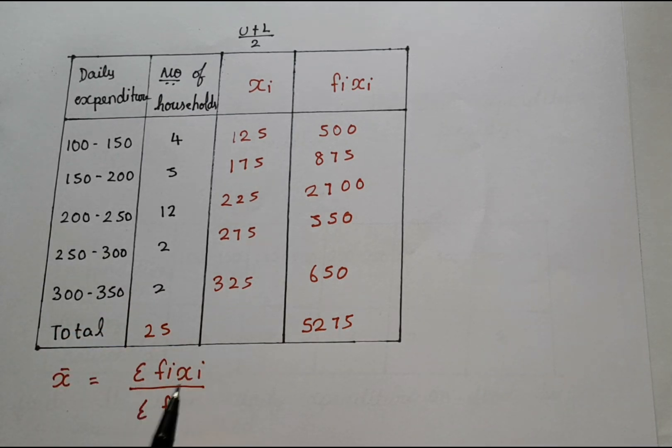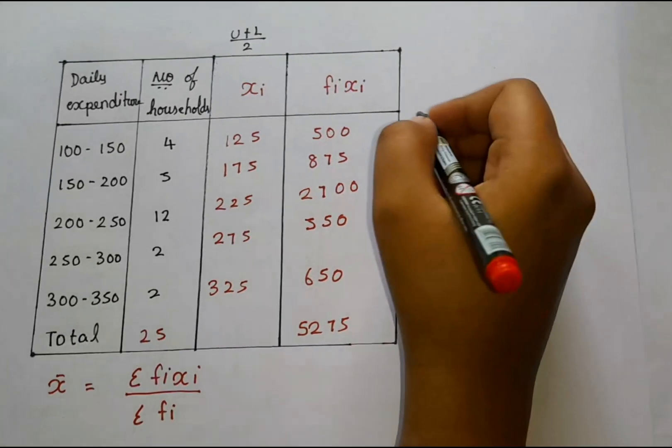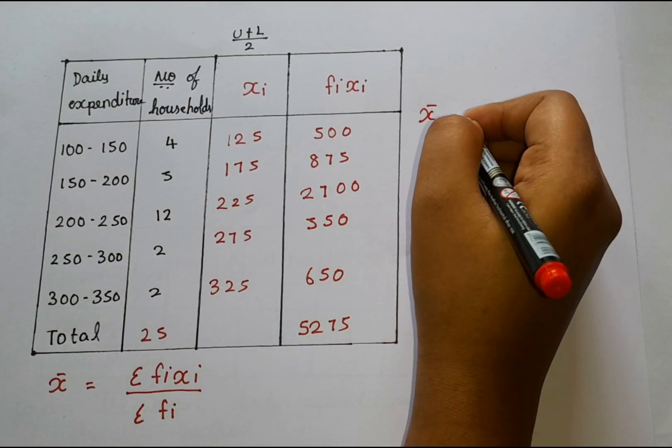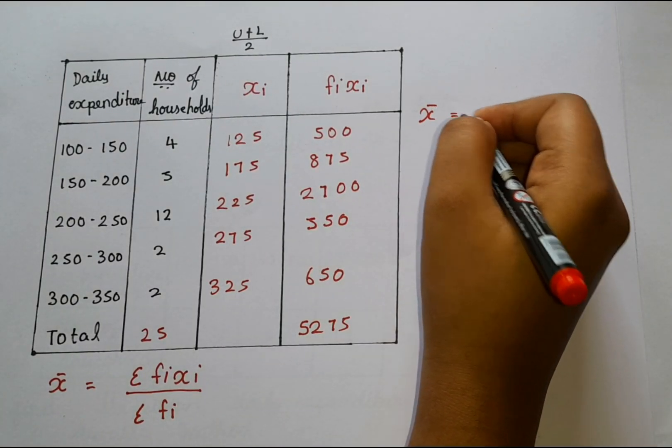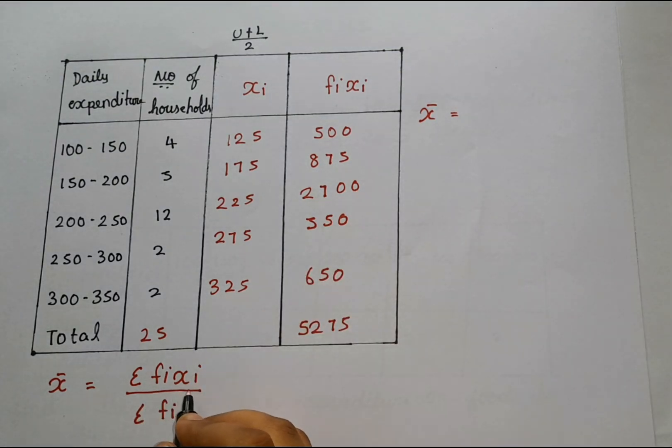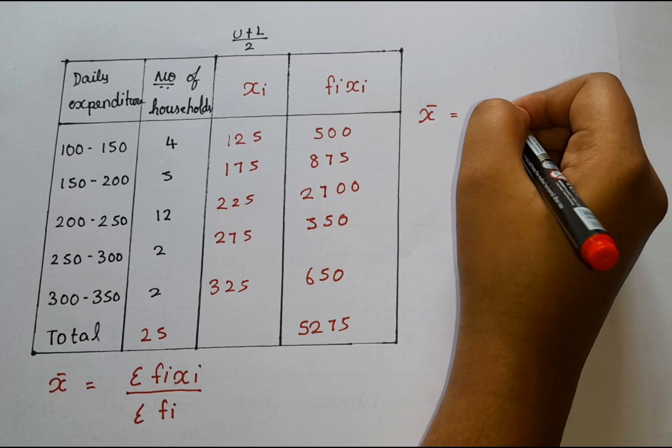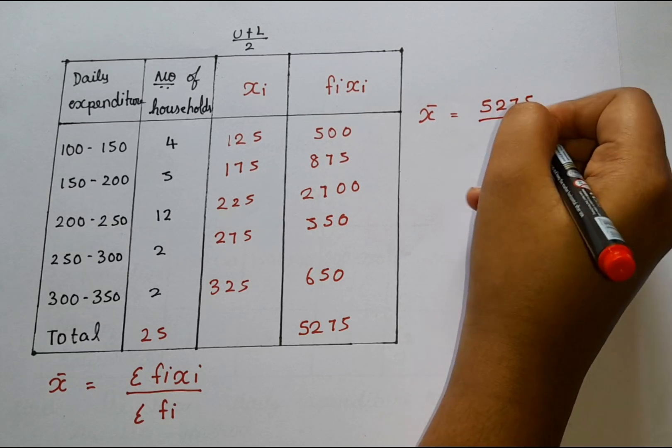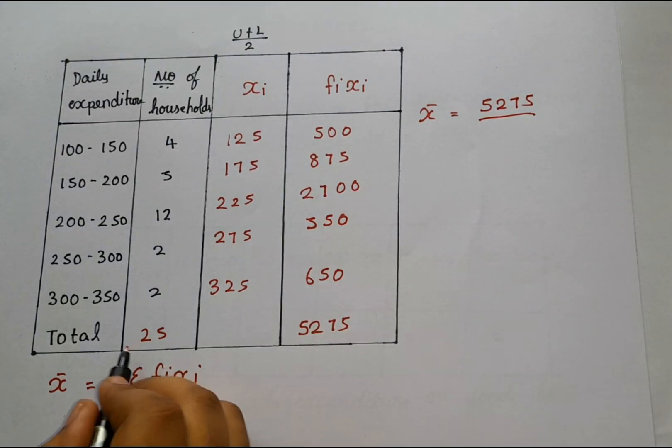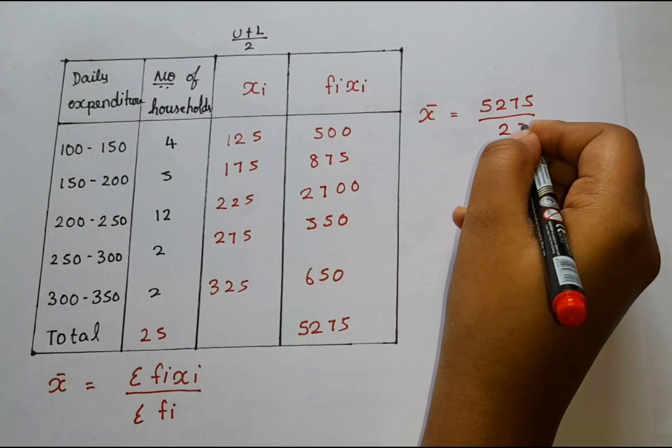So now I know the Fi Xi value as well as the Fi value. So I can actually substitute them. Let us substitute them. X bar is equal to sigma Fi Xi value is 5275. So 5275 divided by sigma Fi. Fi value is 25. So 25.